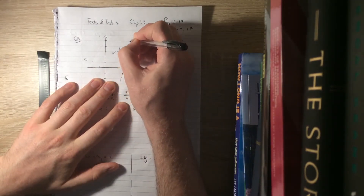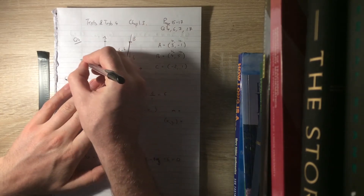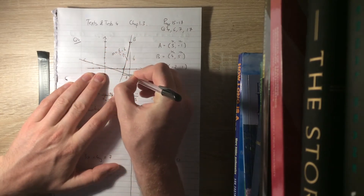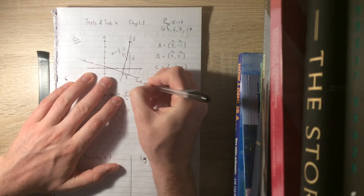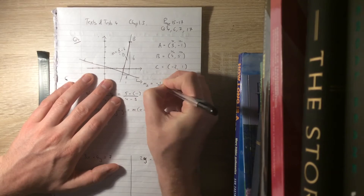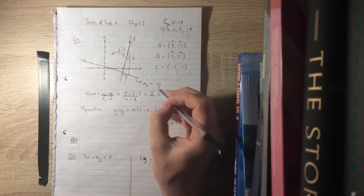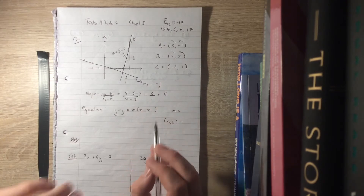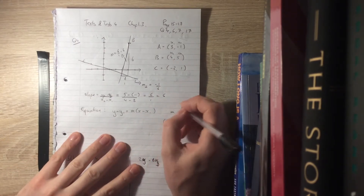That means a line that goes through C and is perpendicular to it will have a slope of minus 1 over 6. If it's perpendicular, flip the slope upside down — 6 over 1 — and put a minus sign in front of it. That's called the negative inverse.